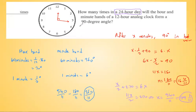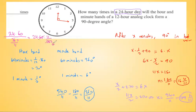So to find how many times this happens in a 24-hour period, we divide 24 times 60 minutes by the interval 360/11. That gives us 24 times 60 times 11 over 360. The 360 and 60 simplify to give 4, and 24 times 4 times 11 divided further gives 44 times.